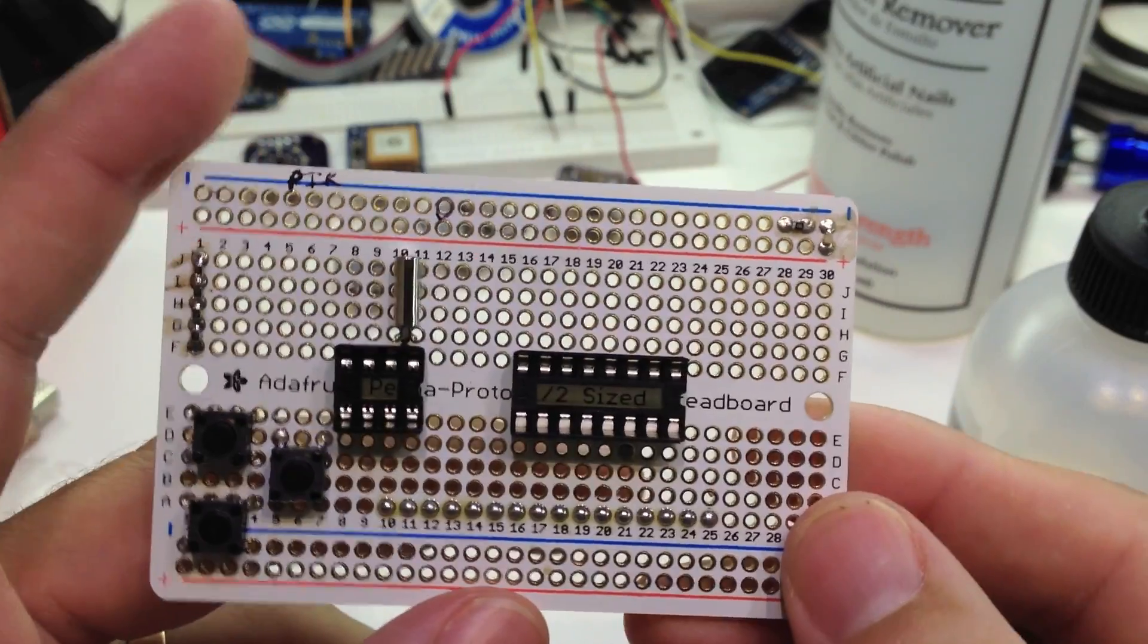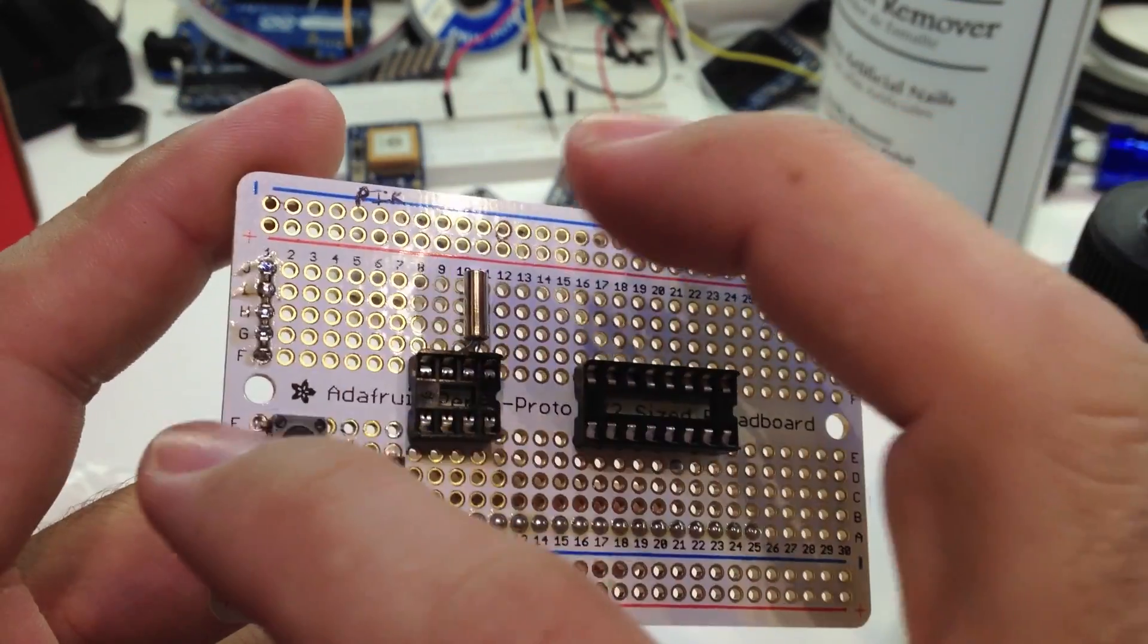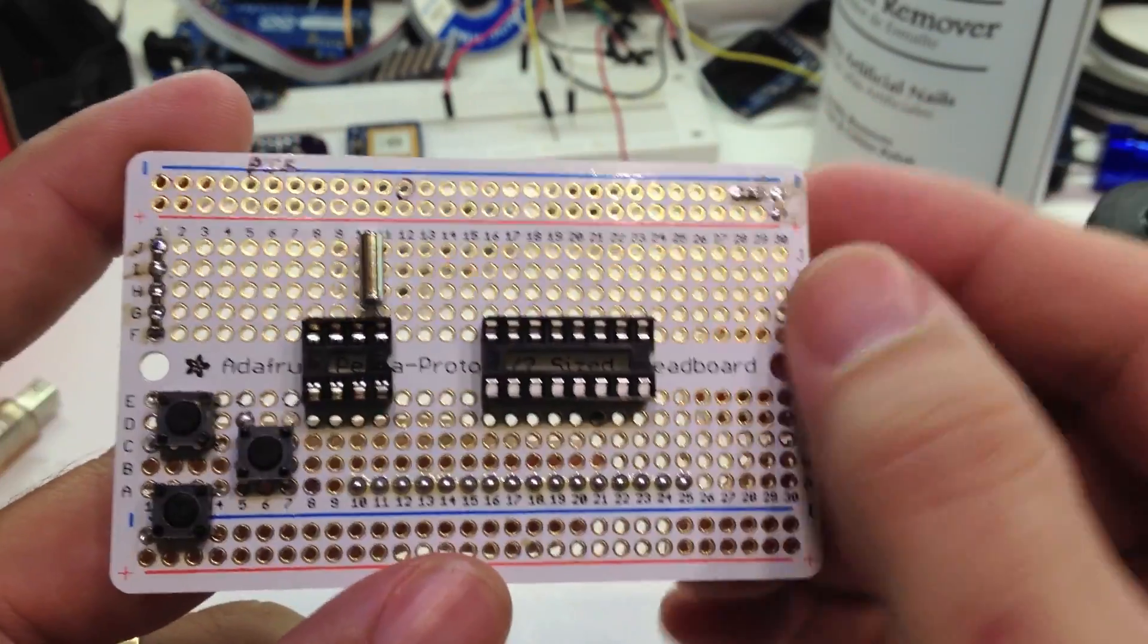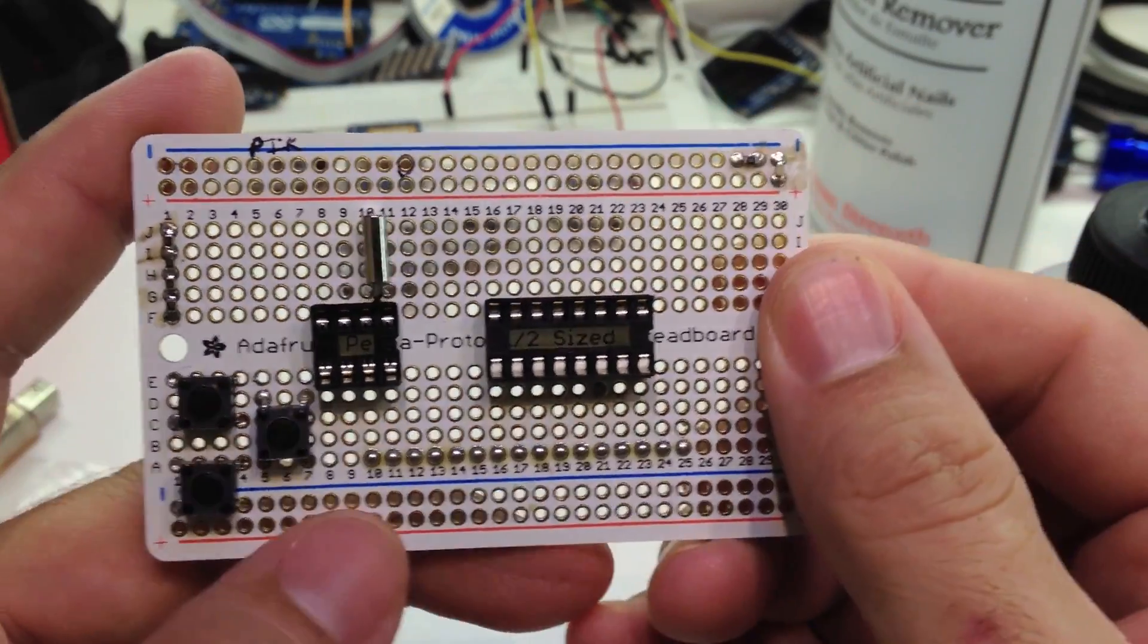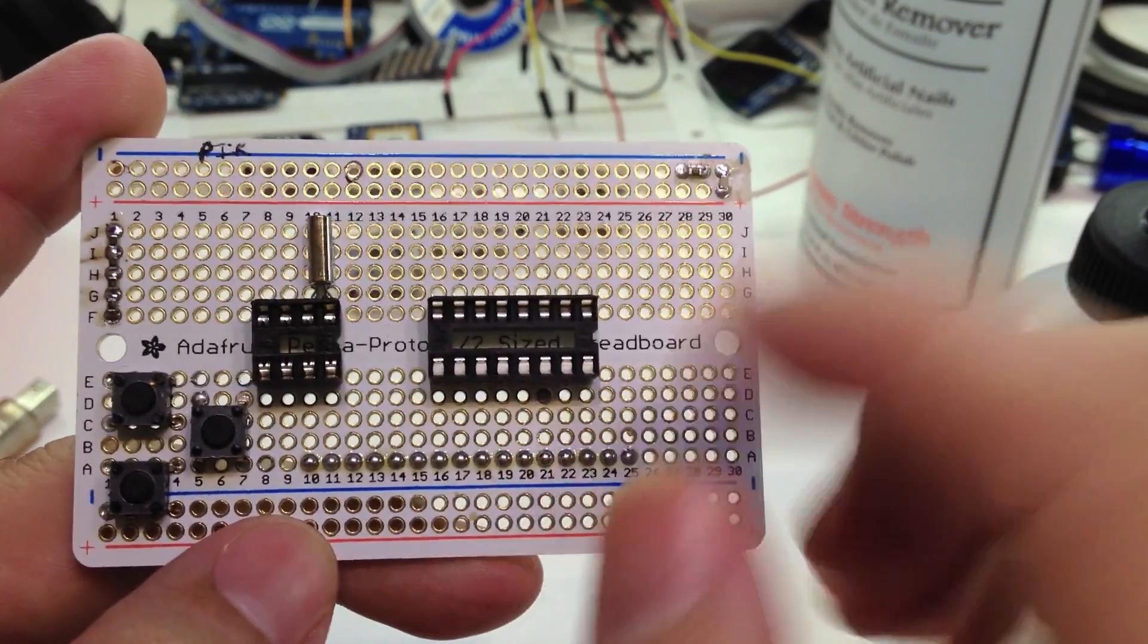Hey everyone, Jeremy from TheCustomGeek.com here, and I have a board I'm working on and I wanted to show you something. This is flux resin from solder, and it kind of uglifies the board. This is the Adafruit PermaProtoboard, it looks really pretty, and you can see there's some down here too.